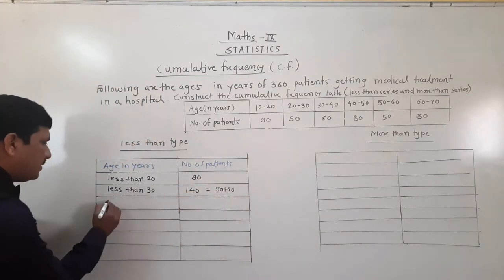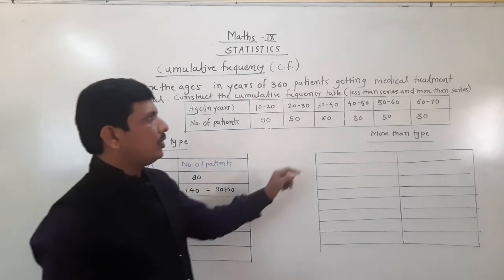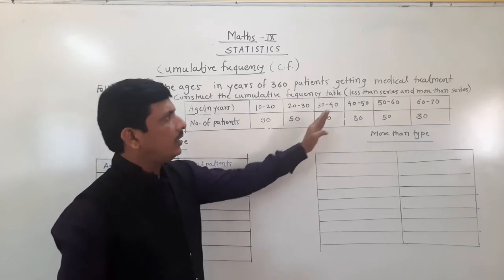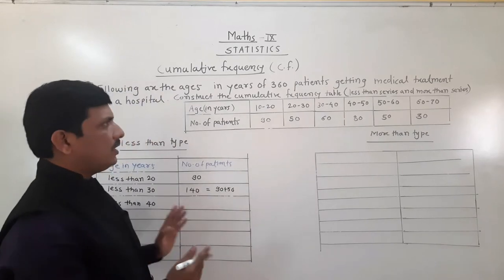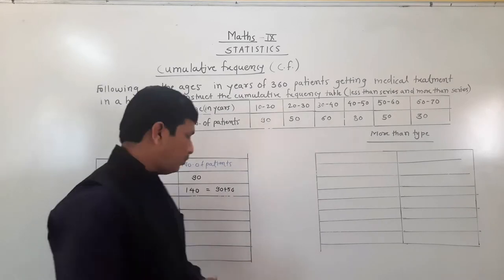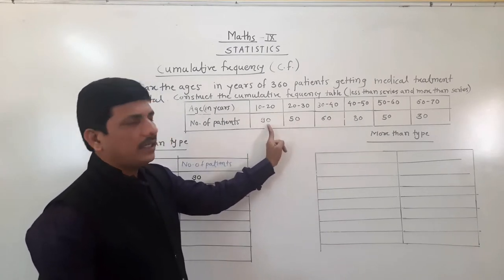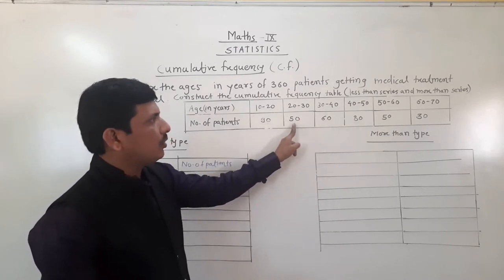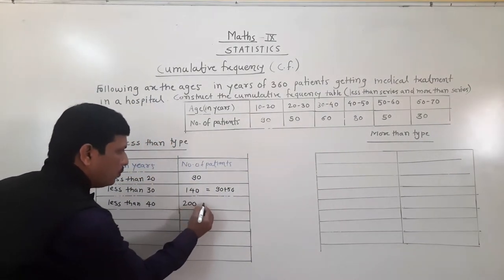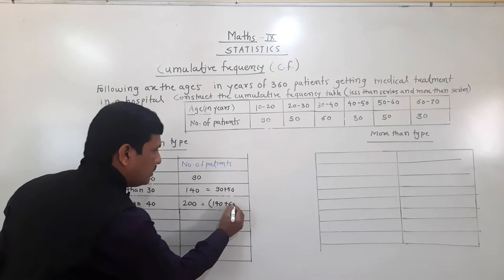Next we write less than 40. Less than 40 means all observations which are less than 40 are included. So 60 plus 50 plus 90 — that is 140 plus 60, which equals 200. So for less than 40, we write 200.